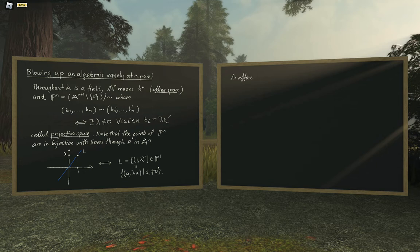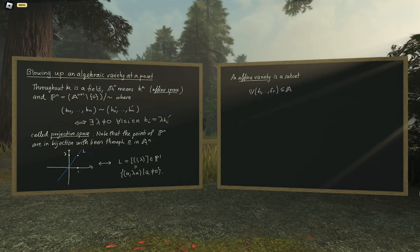I need to introduce this because the blow-up will be cut out by equations inside some affine space. There's a bit of disagreement about whether a variety should be irreducible. I'm of the opinion that variety should mean something irreducible, but for today I'll adopt the convention that a variety is just a closed subset, not necessarily irreducible.